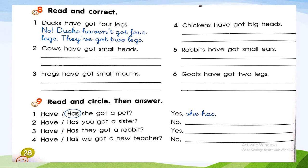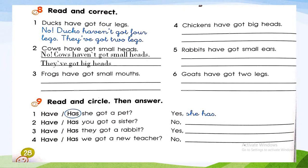Number two: 'Cows have got small heads.' Is this correct? No, cows haven't got small heads — they have got big heads.